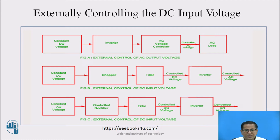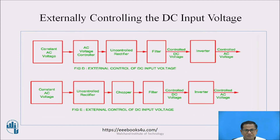Refer to figure C. In figure C, the controlled DC voltage is obtained by changing the firing angle of the controlled rectifier. According to that, the output DC voltage changes.